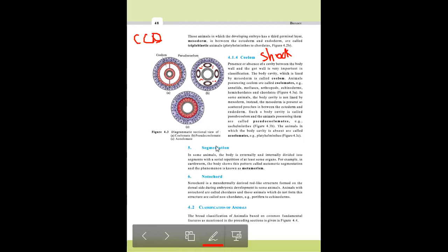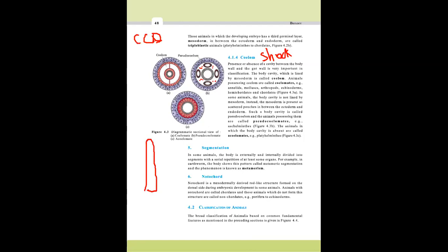Now, what is segmentation? If you see an earthworm, the body shows a pattern of same repeating segments. If you see 100 segments on the outer surface, even inside you will see 100 segments — this is called segmentation or metamerism, and each part is called a segment or metamer. We observe something similar in humans too — for example, there are 12 thoracic vertebrae.